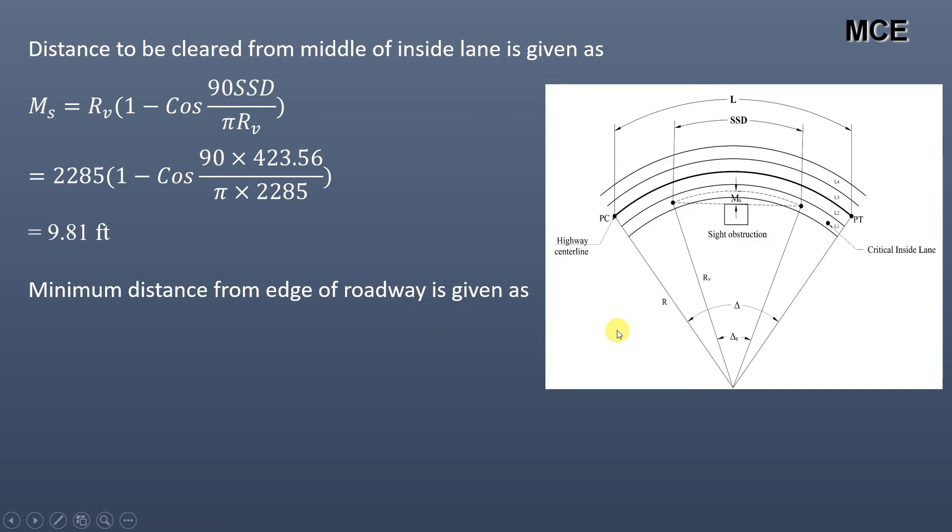The distance from edge of roadway is given as d = Ms - 10/2, that is, 9.81 - 5, which equals 4.81 feet.